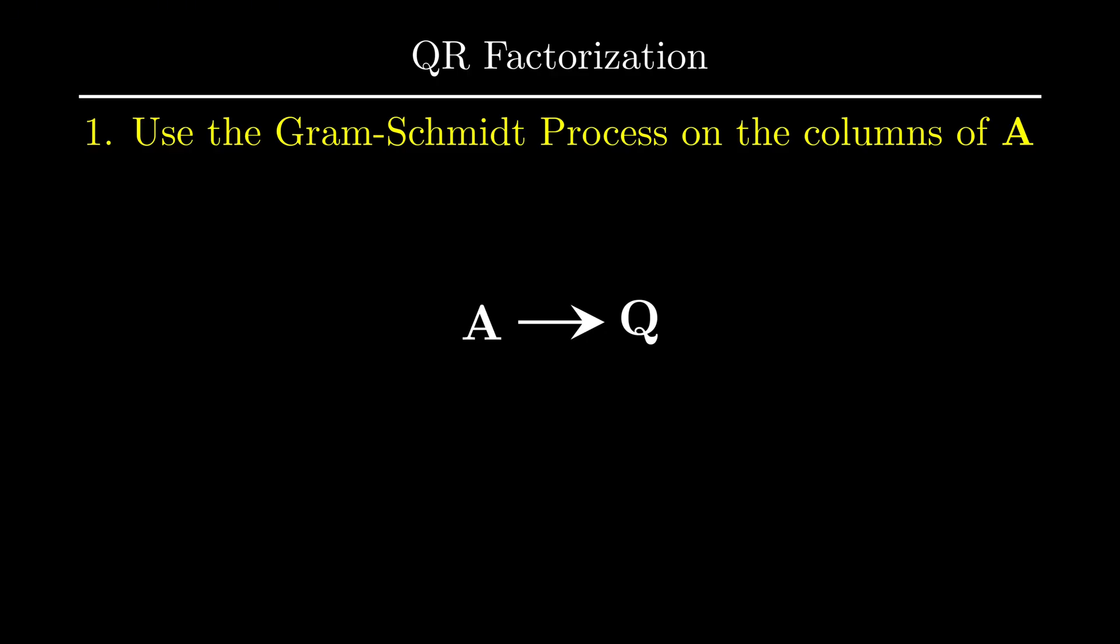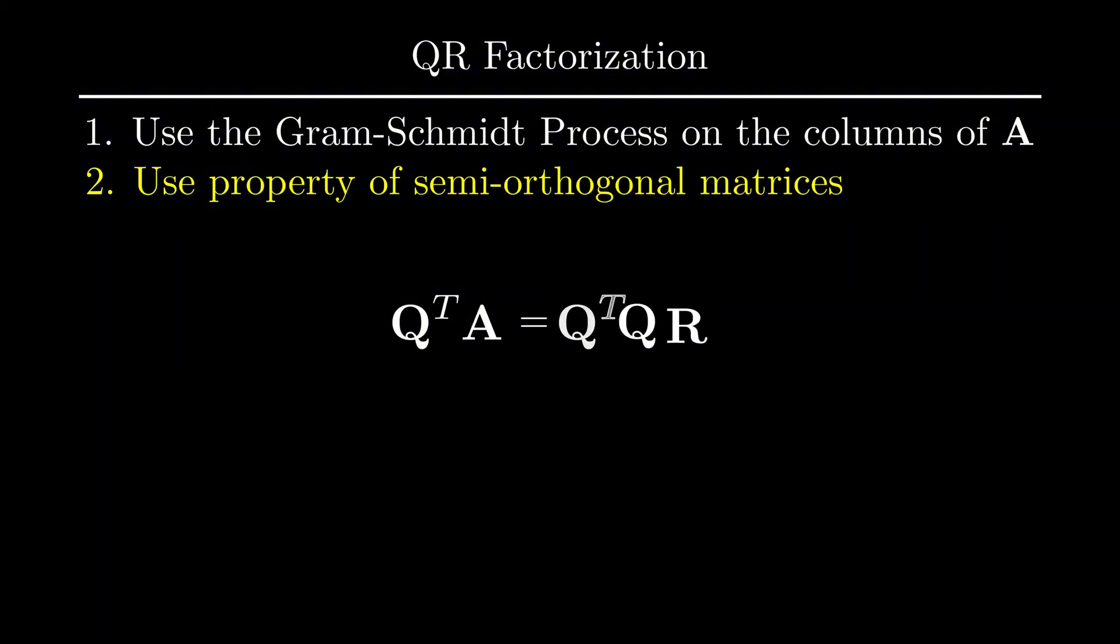And then if we assume that A equals QR, we can find R simply by multiplying both sides of the equation by Q transpose. Recall that the special property of semi-orthogonal matrices allows us to simplify the right side of this equation to simply I times R, or in other words, just R. And hence, we're left with R equals Q transpose times A.